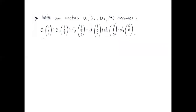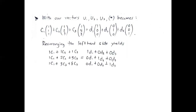With our vectors u sub 1, u sub 2, u sub 3, equation (1★) becomes: c sub 1 times (1,1,1) plus c sub 2 times (1,2,3) plus c sub 3 times (1,5,8) equals the right-hand side. Rearranging the left-hand side yields: 1·c sub 1 plus 1·c sub 2 plus 1·c sub 3, then 1·c sub 1 plus 2·c sub 2 plus 5·c sub 3, then 1·c sub 1 plus 3·c sub 2 plus 8·c sub 3.